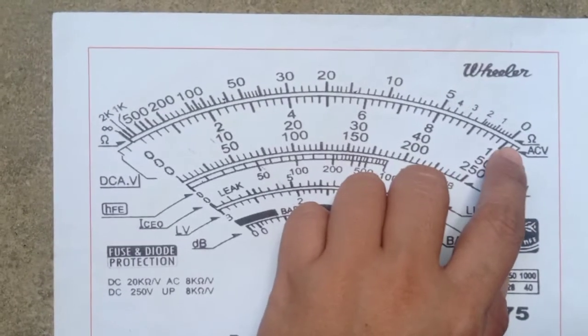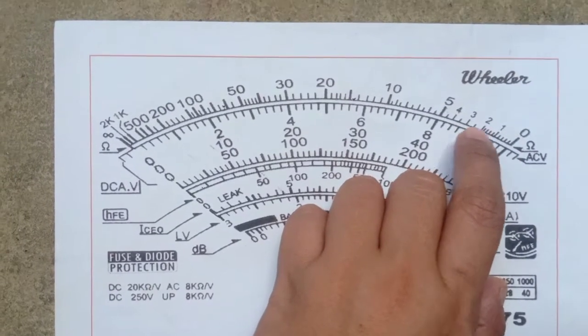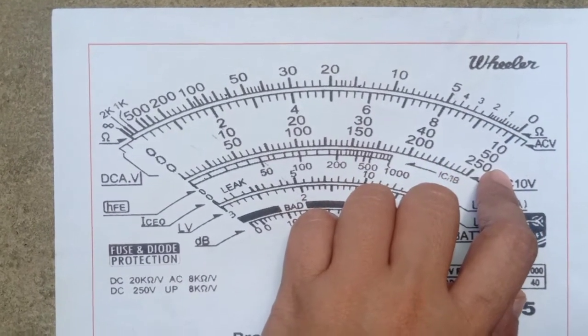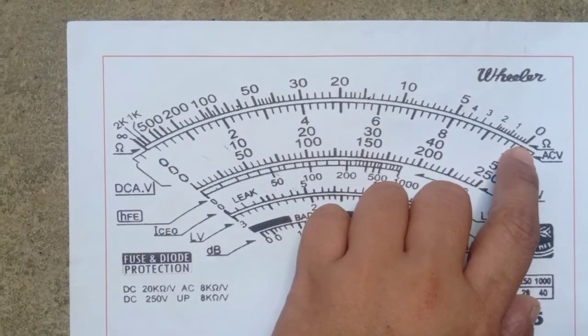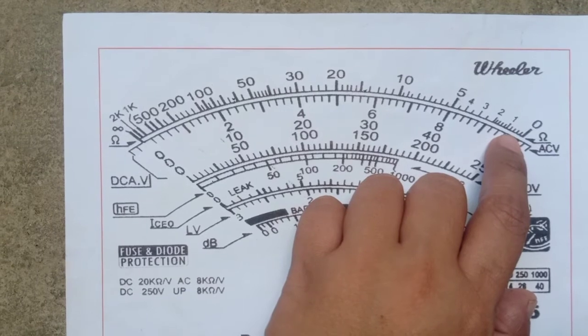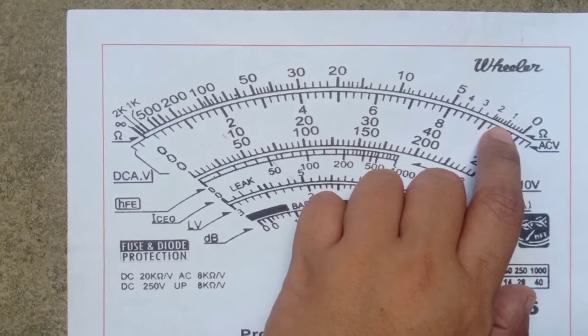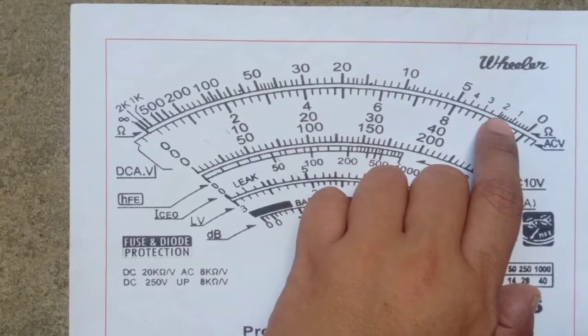Start tayo sa 0 to 2. Ang bilang kada lines niyan ay 0.2. So, 0.2, 0.4, 0.6, 0.8, 1, 1.2, 1.4, 1.6, 1.8, 2.